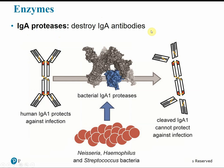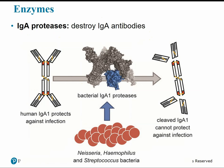IgA proteases are enzymes that destroy IgA protein antibodies. IgA antibodies are naturally produced in our body secretions — saliva and mucus — to help prevent adhesion to the mucosa. Some bacteria produce enzymes that specifically target and break down these antibodies. If we destroy the structure of these antibodies, they'll no longer be able to protect against infection.